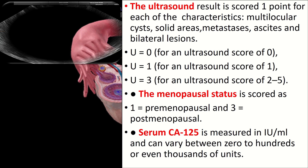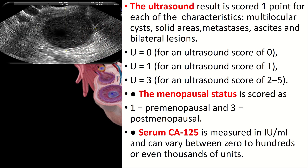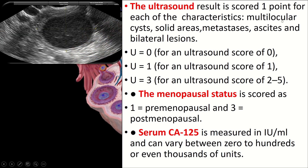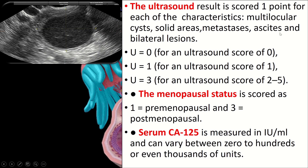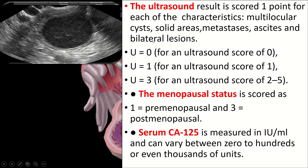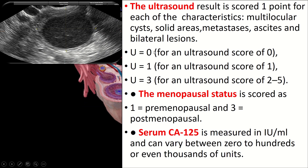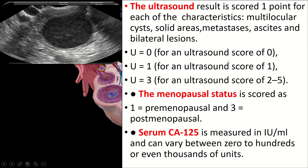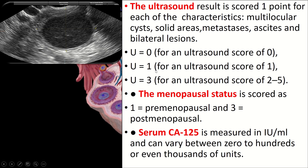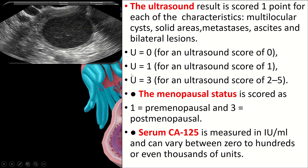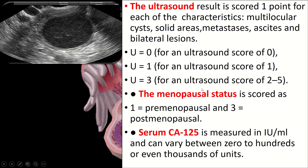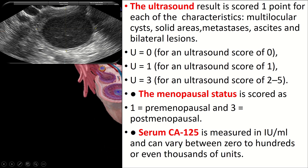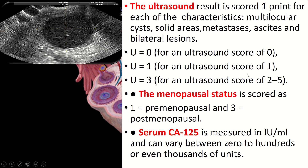The ultrasound result is scored one point for each of the following characteristics: multilocular cysts, solid areas, metastasis, ascites, and bilateral lesions. U equals 0 for an ultrasound score of 0, U equals 1 for an ultrasound score of 1, and U equals 3 for an ultrasound score of 2 to 5.